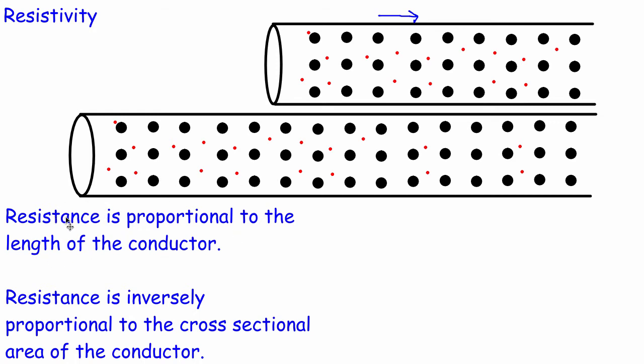We can sum this up: resistance is proportional to the length of the conductor. In other words, if we double the length of the conductor, then we double the resistance.